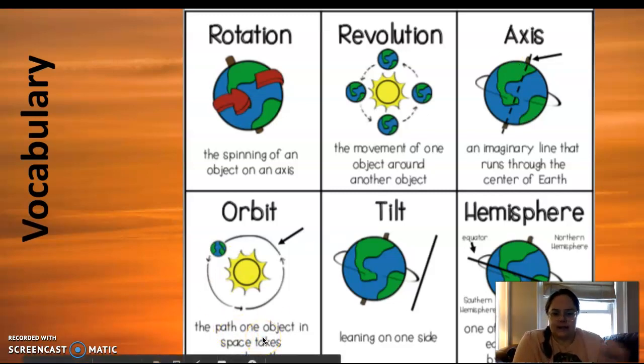Orbit is the path that it takes around the object. So our orbit would be the path that Earth takes around the sun. When something is tilted, it's leaning on one side and the Earth does that as it spins and that's important for our seasons. And then the last word is hemisphere, which is just a half of the Earth. Please refer back to this slide if you need to for the vocabulary terms.